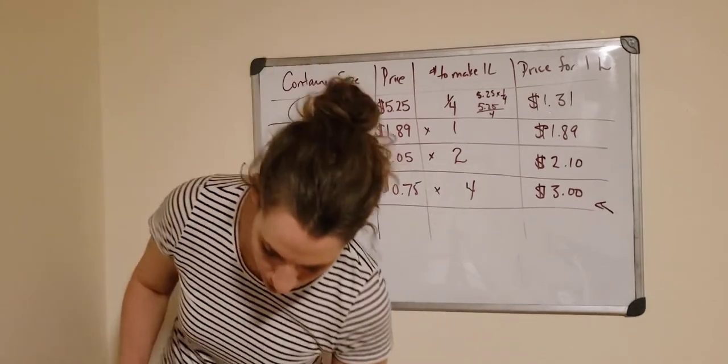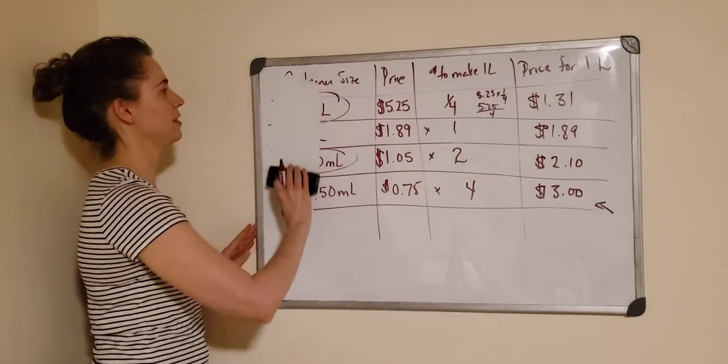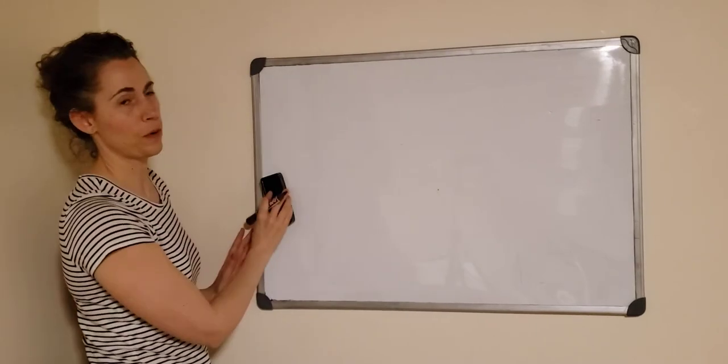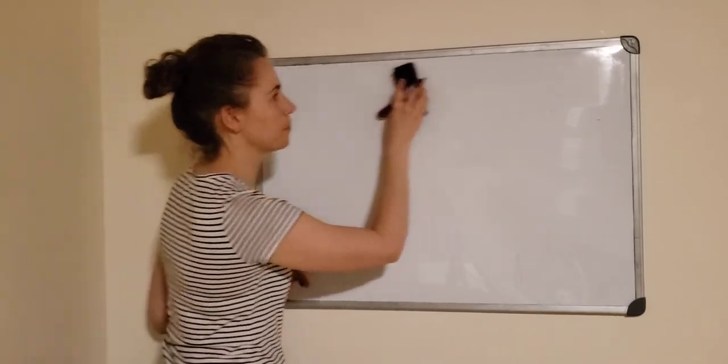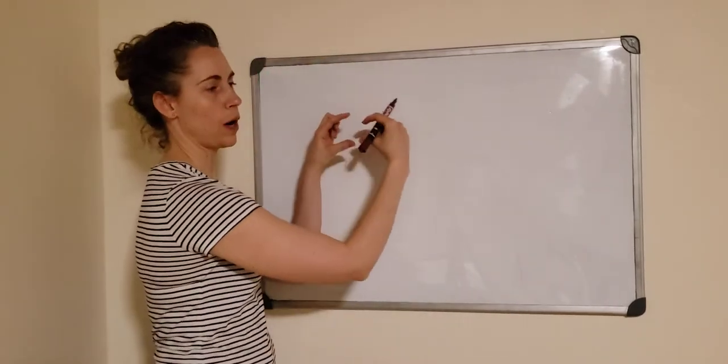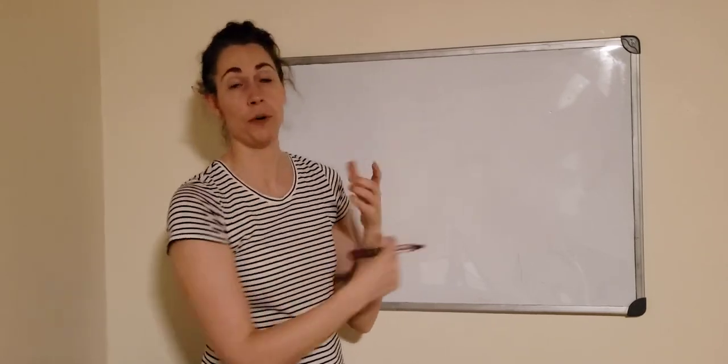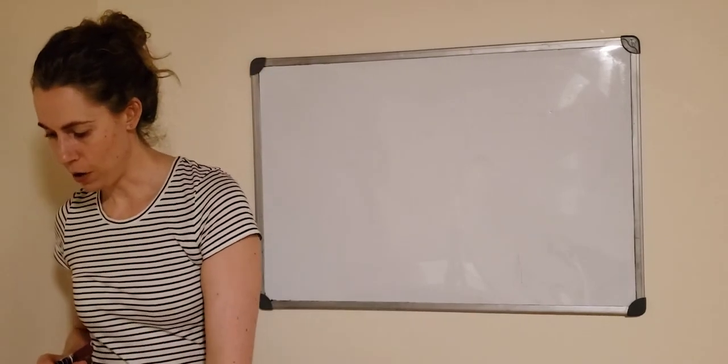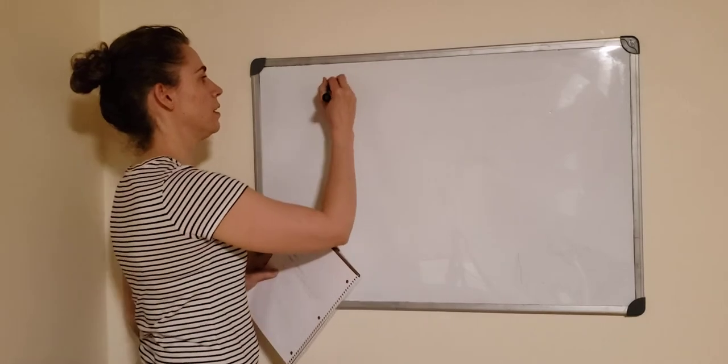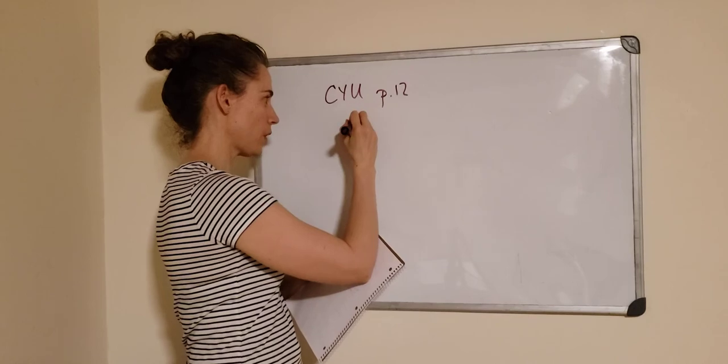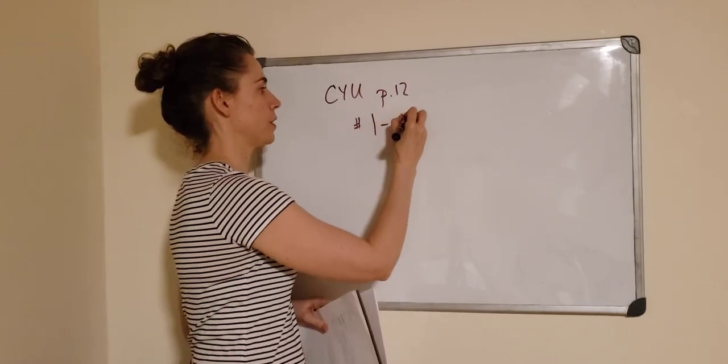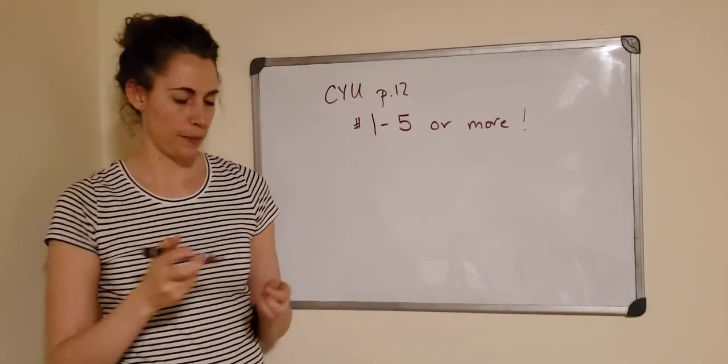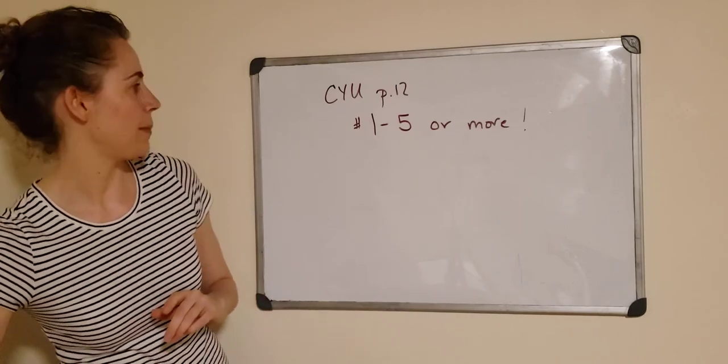I'm going to stop at that and assign you some questions. A lot of this is really common sense and thinking. If you've done any type of grocery shopping, you're probably used to looking at this kind of thing. One interesting thing to know - a lot of products will actually have on the little barcode where they say the price on the shelf, they'll actually say the unit price for you. So you don't have to get out your calculator and do it. They don't always, but sometimes they will. For your assignment, I want you to do the check your understanding on page 12. I'm going to assign questions one through five, or more if you want. They're all great questions. The answers are in the back of the book as well so you can check. If you have any questions at all, please let me know. Have a great day.